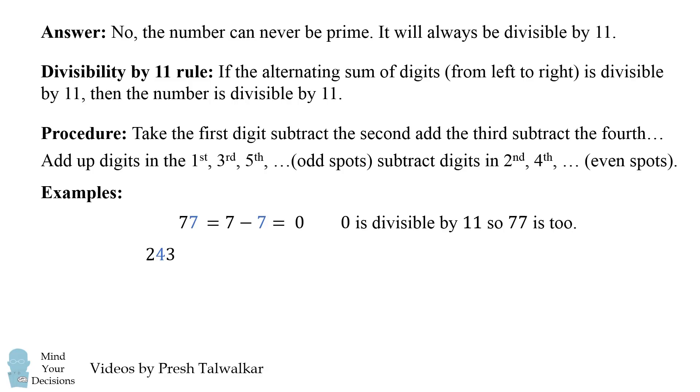Consider 243. The alternating sum is 2 minus 4 plus 3, which is equal to 1. Since 1 is not divisible by 11, 243 is not divisible by 11.